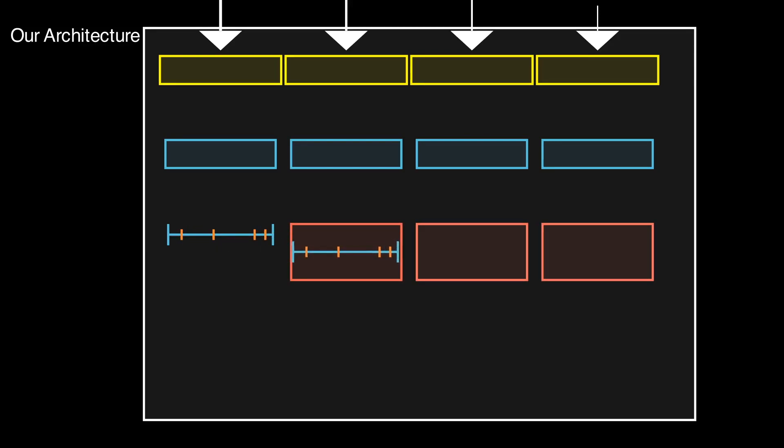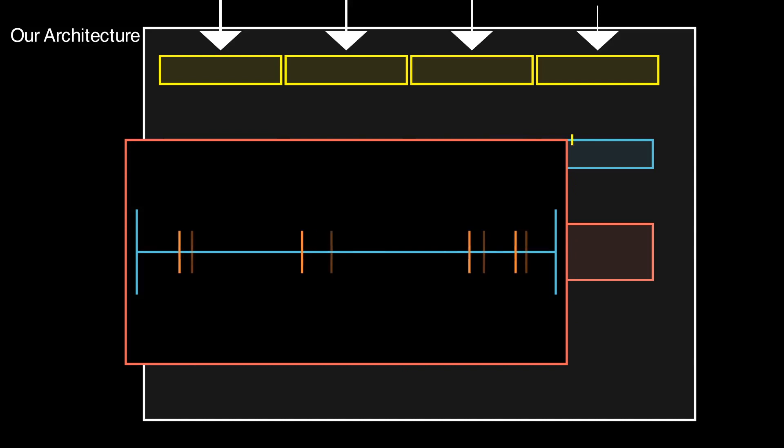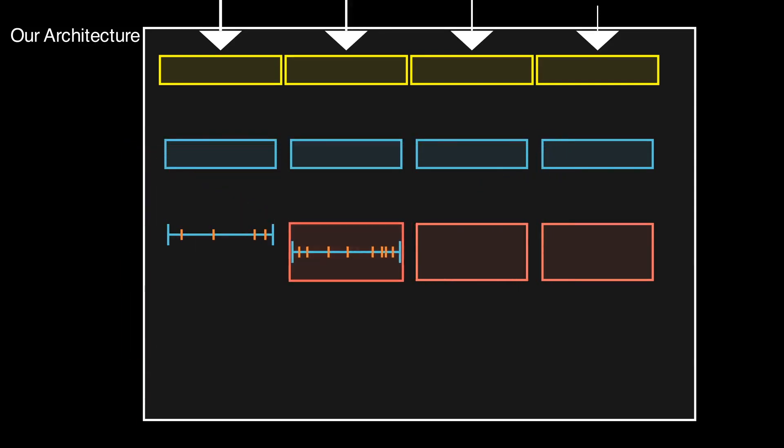For the subsequent decoder layers, we use the bin splitter MLPs that split each bin into two new bins. Therefore, the number of bins double at each decoder layer.